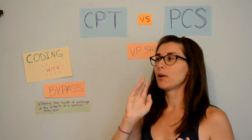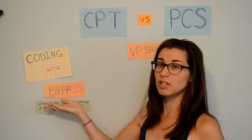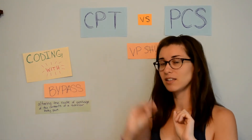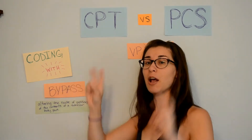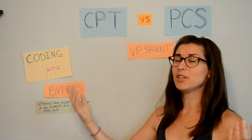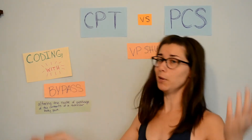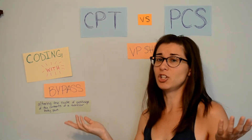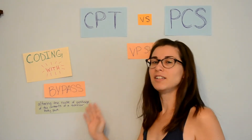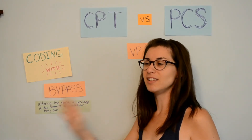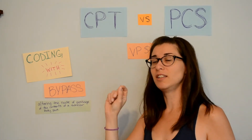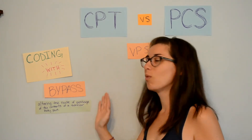Yes, there are other procedures in other body systems and body parts that use the same root operation, but remember: PCS focuses on the objective of the procedure. The objective might be the same regardless of body part or body system, and that's why we have uniformity in PCS — we know bypass will always be available when that objective is present. We know that in each body system where bypass procedures are available, we will find that root operation table, which gives us all the different body parts commonly used, and we can fill in the rest of our code without searching the index for CPT terms.